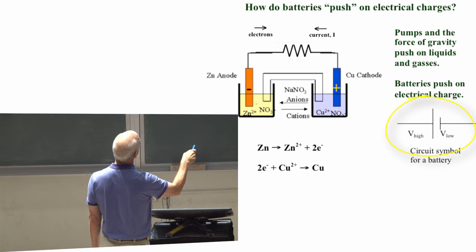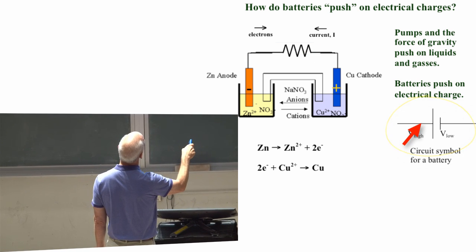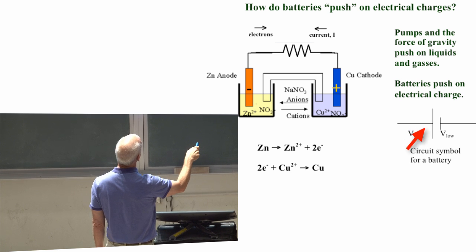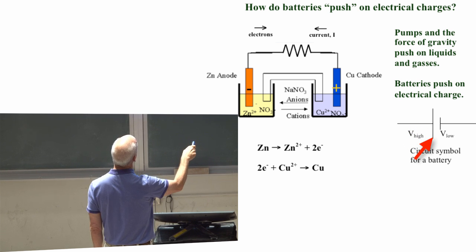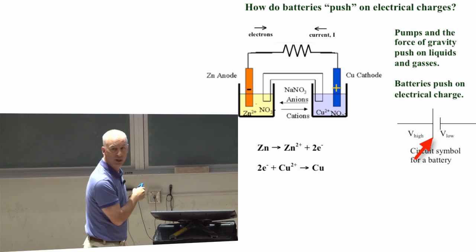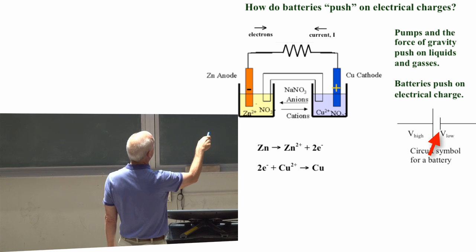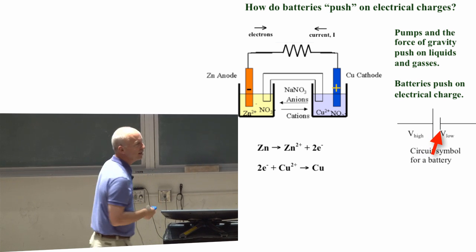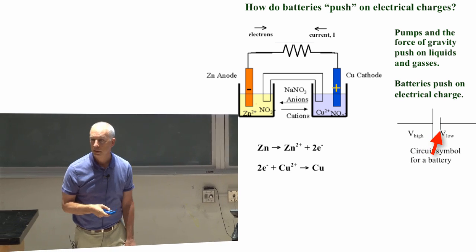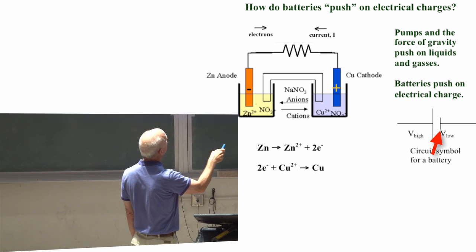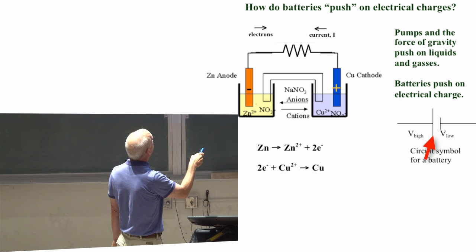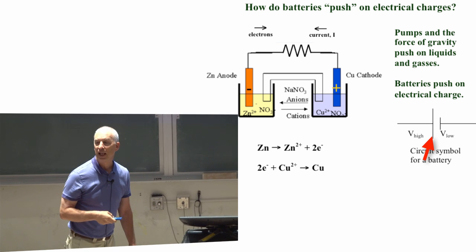This is a symbol for a battery. The wire here is zero resistance. This line here is the high voltage side of the battery, the positive side. This little line is the low voltage side of the battery, the negative side. This negative side is spitting electrons out. This positive side is trying to gobble up electrons.